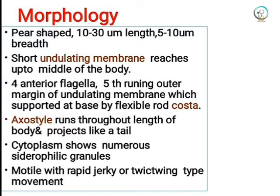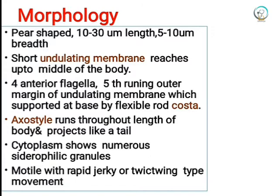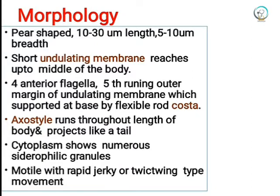Regarding the morphology of Trichomonas vaginalis, it is pear-shaped, 10 to 30 micrometers in length and 5 to 10 micrometers in breadth. It consists of an undulating membrane which reaches up to the middle of the body, and four anterior flagella, with a fifth flagellum running along the outer margin of the undulating membrane.